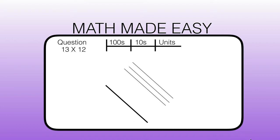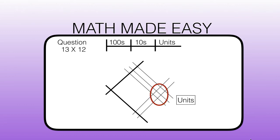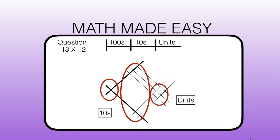Then from the top right, one thick line to represent how many tens there are in 12, and 2 thinner lines to represent the 2 units. We are going to draw a circle around where the thin lines meet thin lines to count our units, where thin lines meet thick lines to count our tens, and where thick lines meet thick lines to count our hundreds. We know the answer is going to be more than 100 as 10 times 10 is 100.